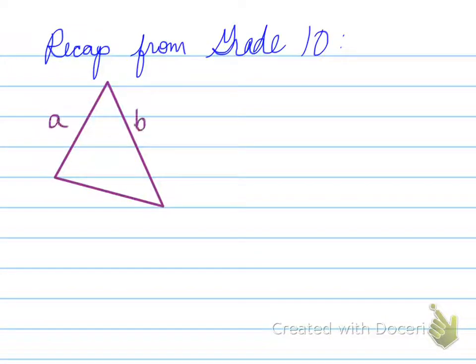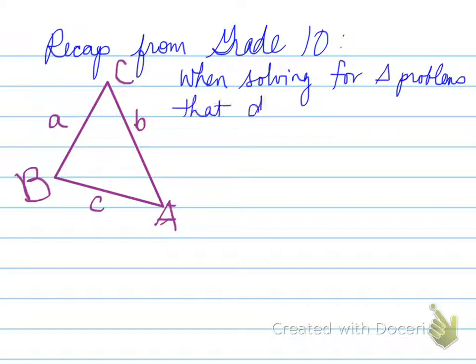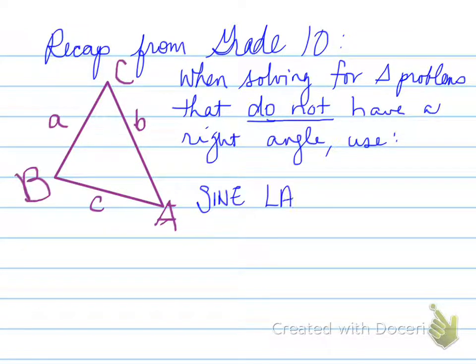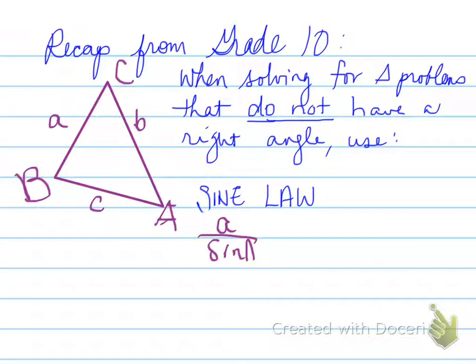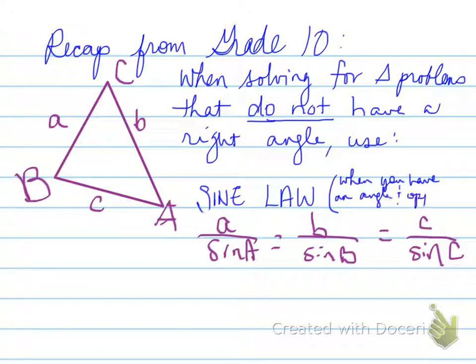Alright, recap from grade 10. Do you remember in grade 10, when we had the different laws for any type of triangle that wasn't a right triangle? We used in grade 10 the two laws, one of them called sine law, which is sine A over a, sine B over b, sine C over c, and or a over sine A, b over sine B, and c over sine C. And this is when you have an angle and its opposite side. It's crucial for sine law.